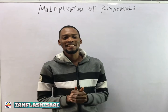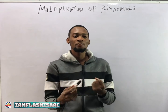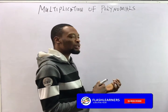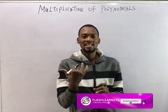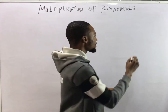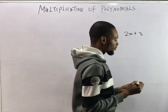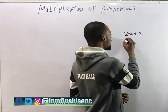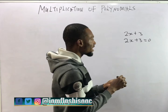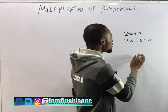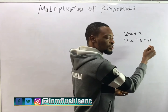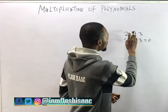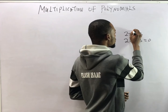Hello guys, I am Flash Isaac, and today I'll be taking you through multiplication of polynomials. In my previous videos, I established that polynomials are expressions with ascending or descending power of variables. When you have 2s plus 3, this is an expression because there is no equality sign. Now, 2s is the same thing as 2s raised to the power of 1.